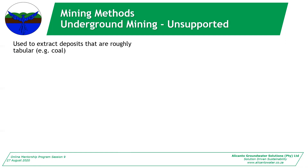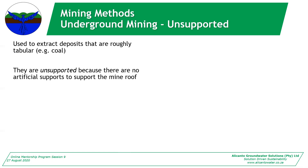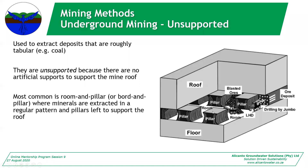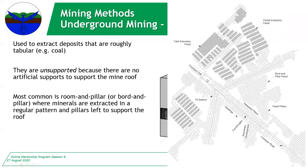The first type of underground mining is unsupported mining. It extracts deposits that are roughly tabular, such as coal deposits. It's unsupported because there's no artificial supports for the mine roof — there are still rock bolts and anchors, but no support slats or beams. Most commonly this is room and pillar or board and pillar mining, where minerals are extracted in a regular pattern and pillars are left to support the roof. This is what we do in underground coal mines in South Africa — you mine between the pillars creating a room-and-pillar honeycomb effect. At the end of mining, they sometimes do total extraction or stooping, which is complete removal of the pillars.